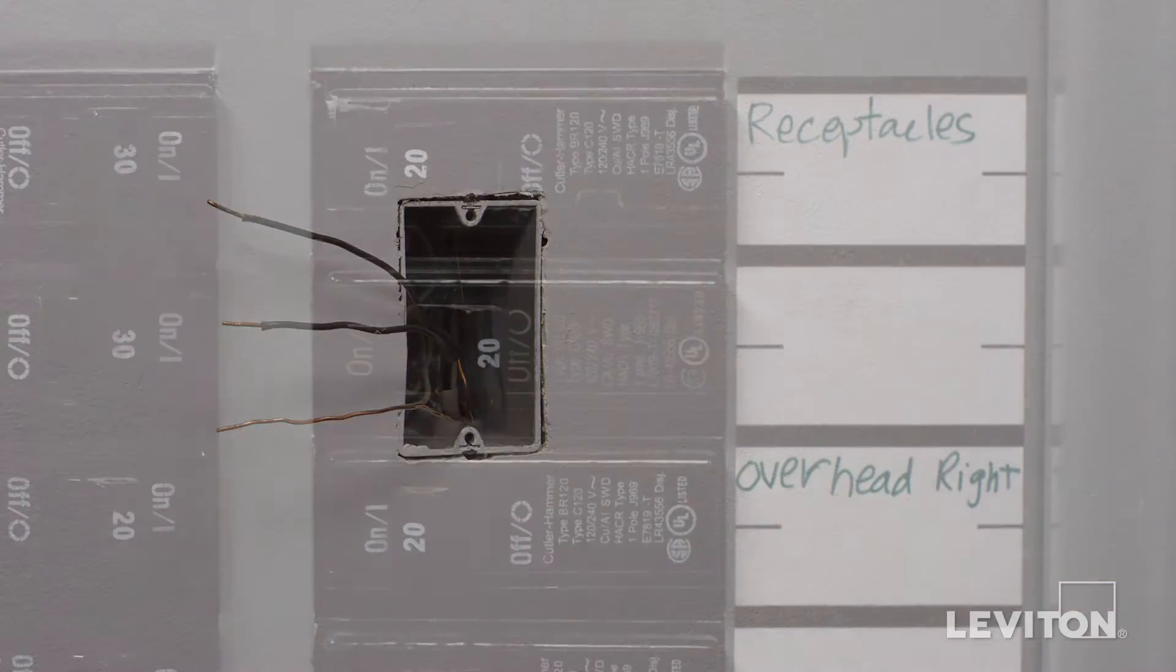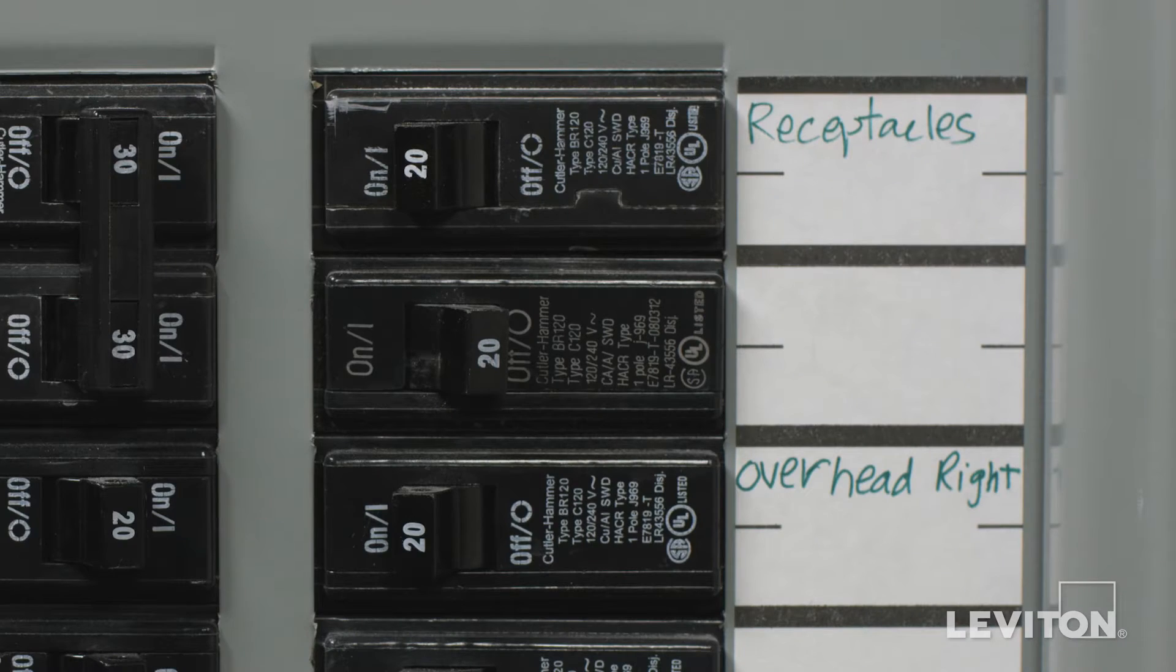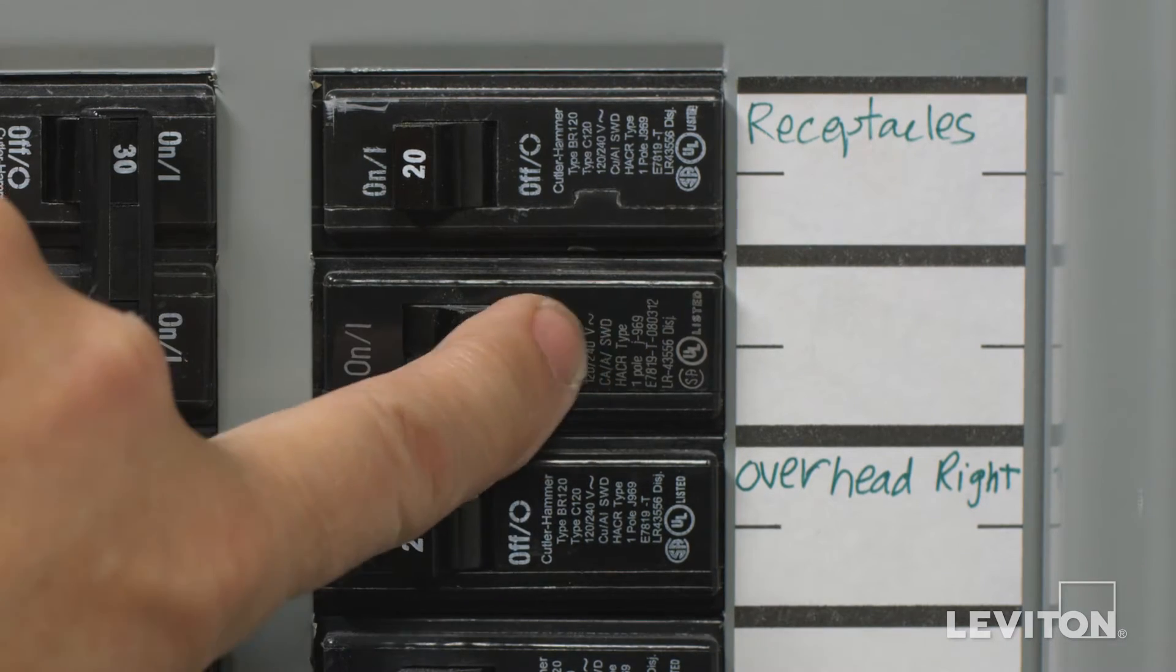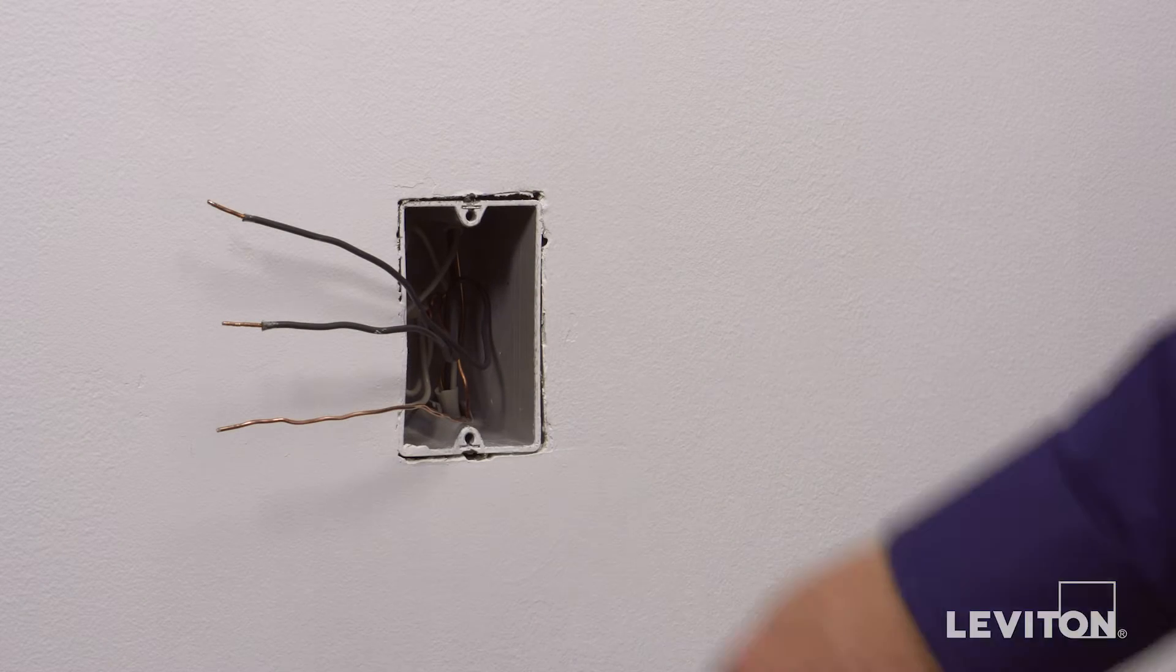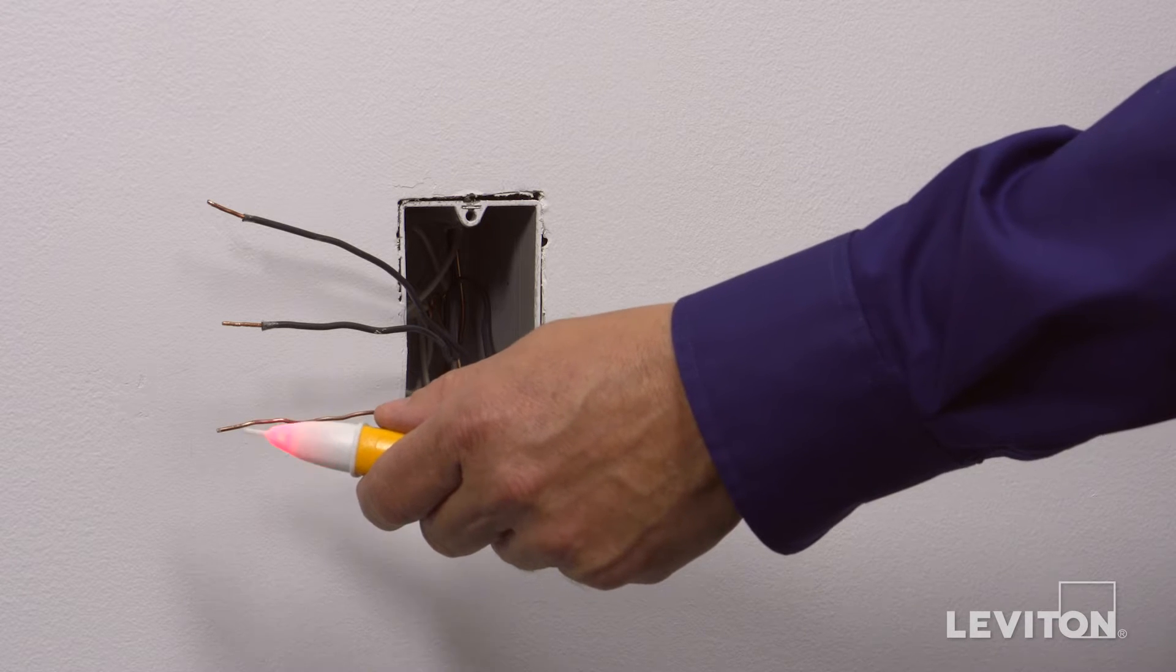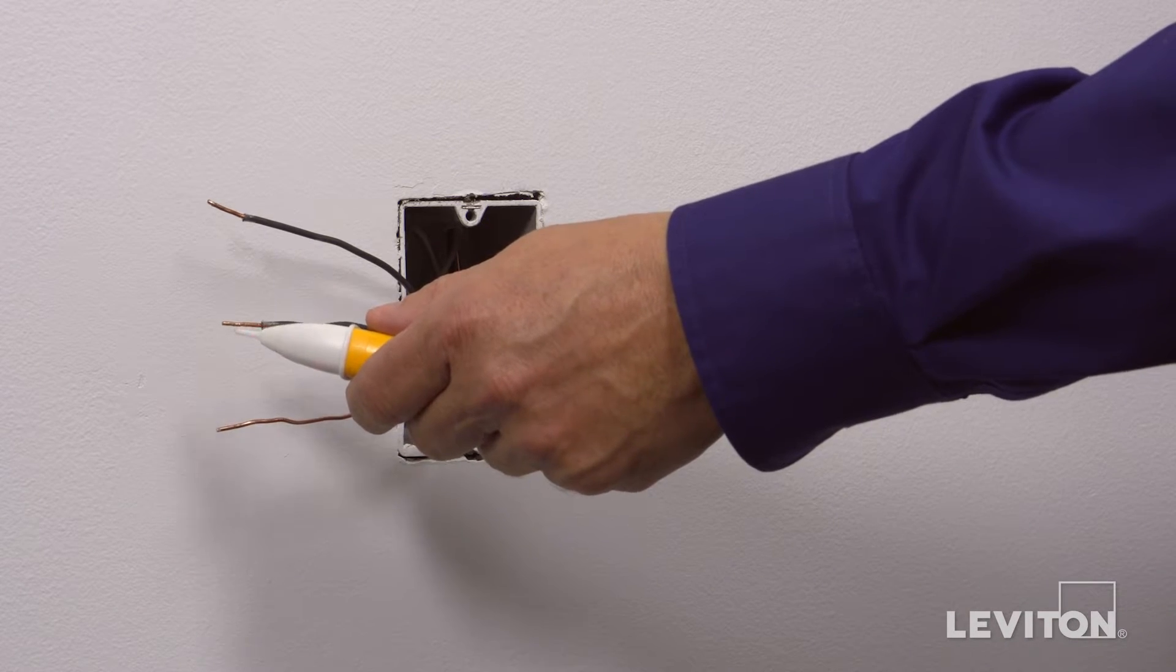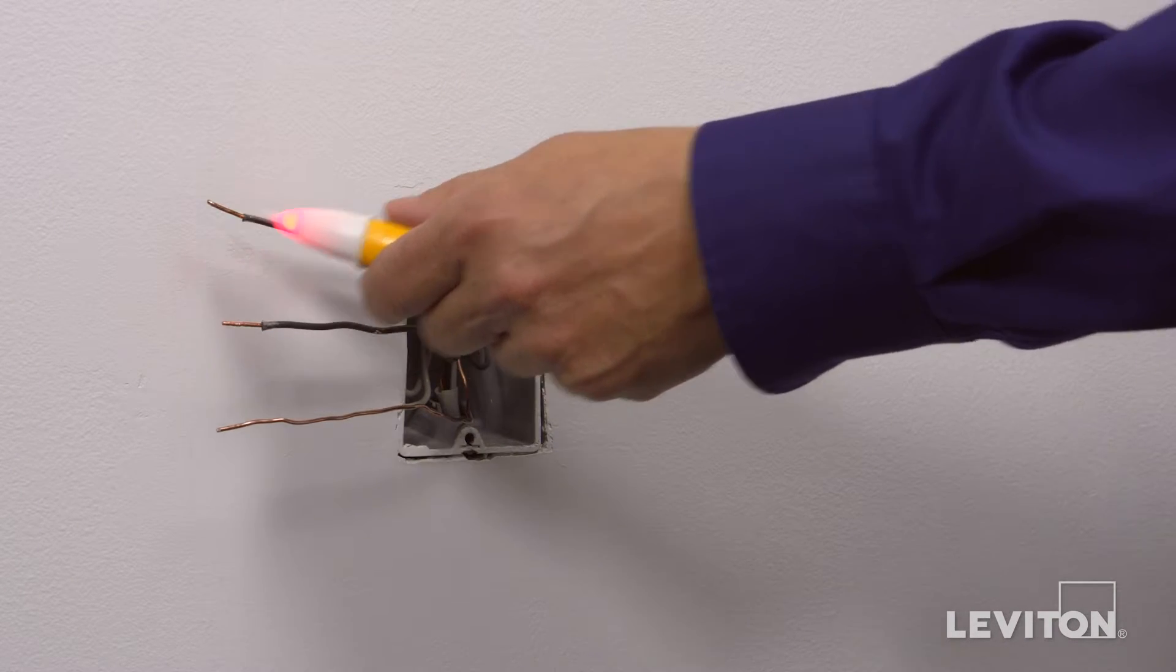Now we need to identify the hot wire. To do this, turn the circuit breaker back on. Carefully use the voltage tester to test each wire. The hot wire will be indicated by the tester.